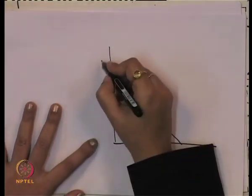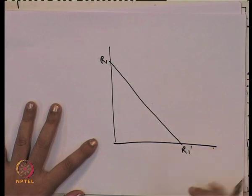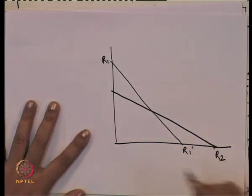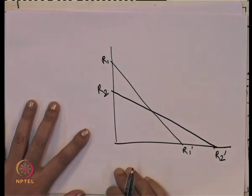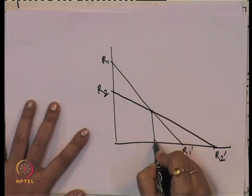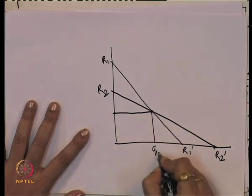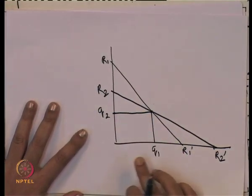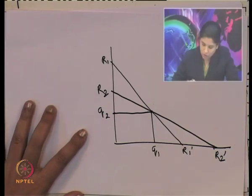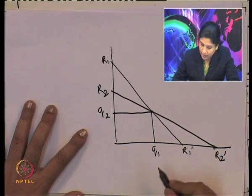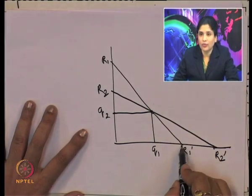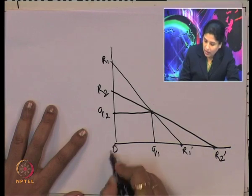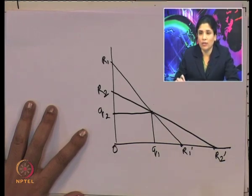Looking at the graph, R1, R1-dash is the reaction function of firm A, and R2, R2-dash is the reaction function of firm B. The amount Q1 is produced by A and Q2 is produced by B. The point O R2-dash represents the total market demand. Initially A will produce a certain amount, and from there the action-reaction pattern begins.